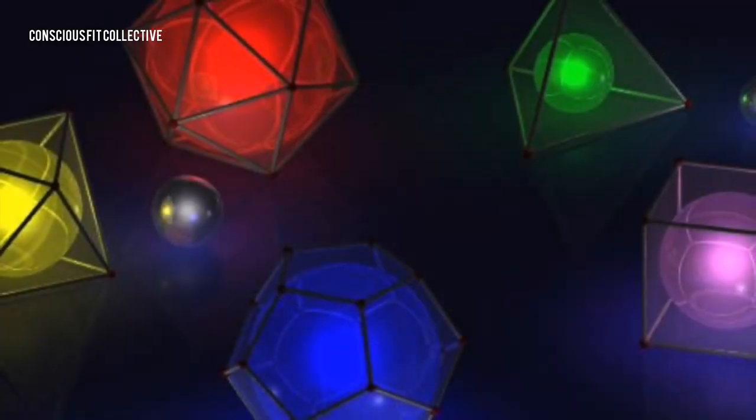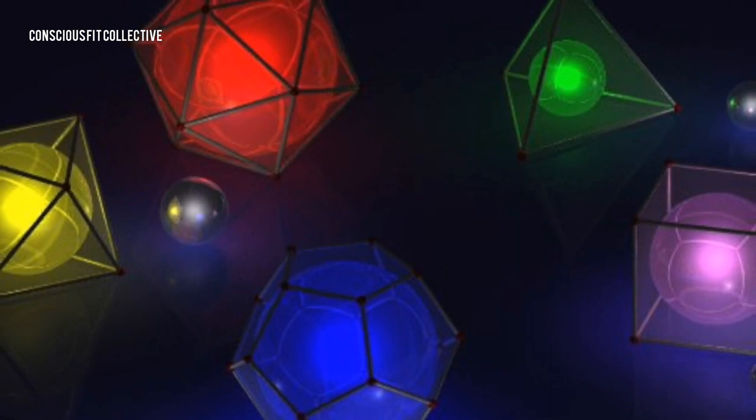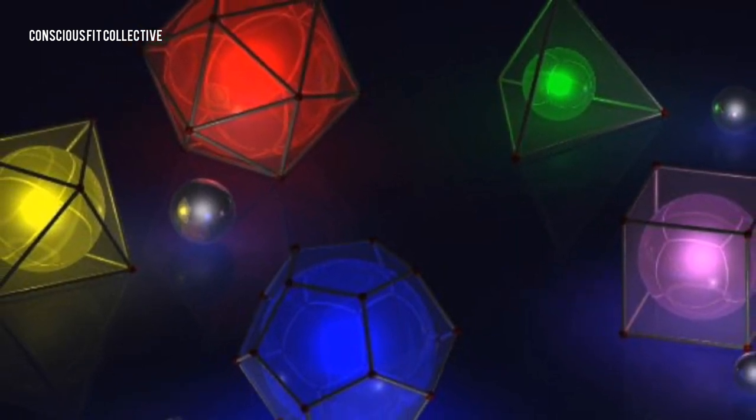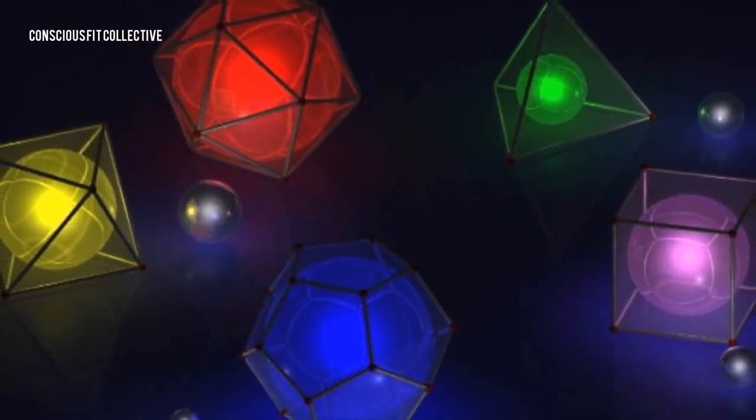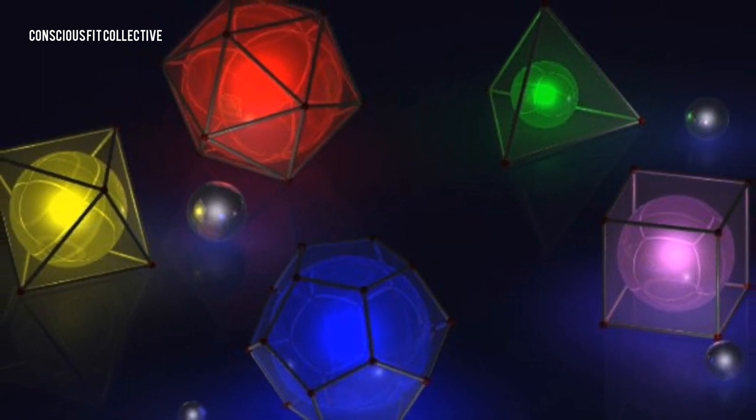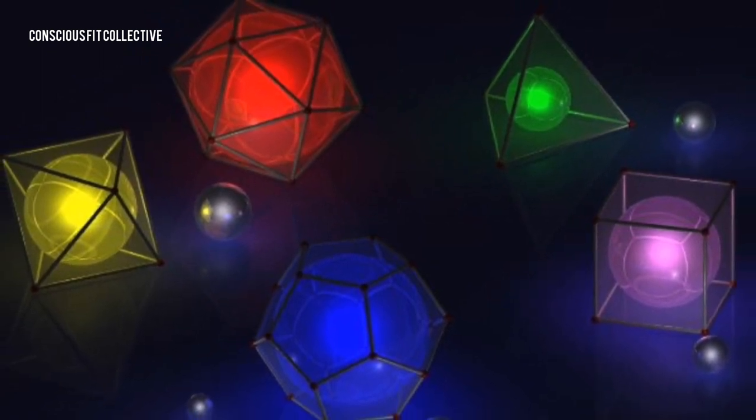Five circles also represent the Platonic solids: Tetrahedron, cube, octahedron, dodecahedron, icosahedron.